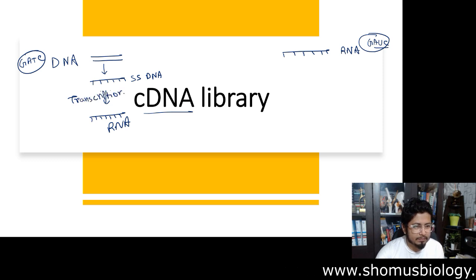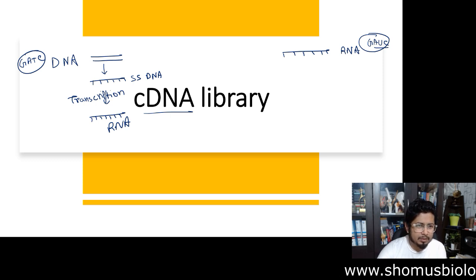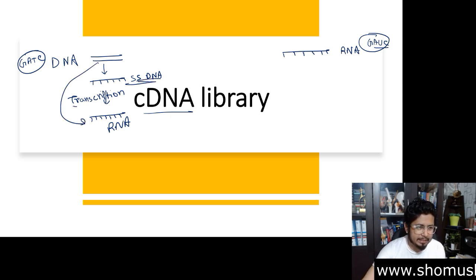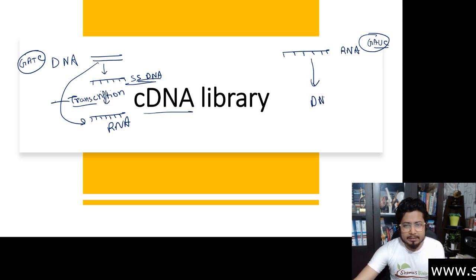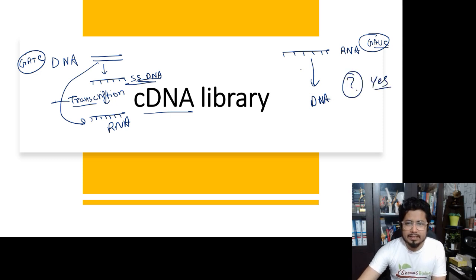Transcription is the method of converting DNA into RNA — double-stranded DNA makes RNA, and that process is known as transcription. Now, can we go from RNA back to DNA? The answer is yes, and that process is known as reverse transcription.